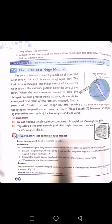When the Earth revolves around its axis, the charged material present inside its core also tends to move. As a result of this rotation, a magnetic field is produced, similar to bar magnets.